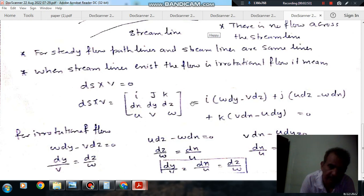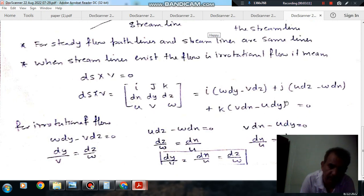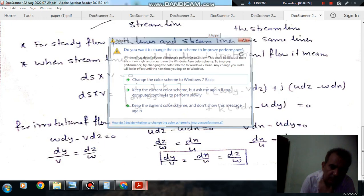So, i is w·dy minus v·dz plus j is u·dz minus w·dx plus k is v·dx minus u·dy should be equal to 0. So, for irrotational flow, this term should be equal to zero, or the whole of the vector should be zero. For whole of the vector should be zero, whole of this vector or vector product of ds into v should be zero.